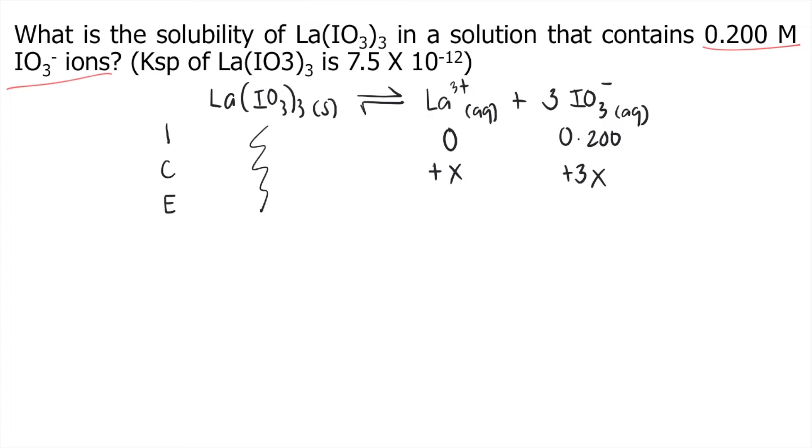For equilibrium, that's X for lanthanum 3+, and 0.200 plus 3X for iodate. Now after doing the ICE table, you need to write the Ksp expression.